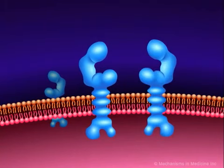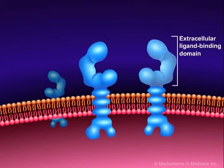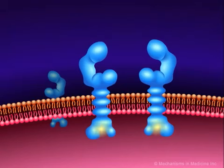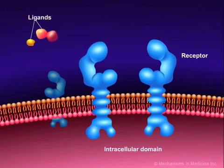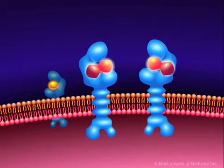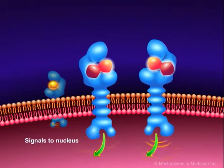Receptors often consist of three domains: an extracellular ligand binding domain, a transmembrane domain, and an intracellular domain. Binding of a ligand to the extracellular domain activates the receptor tyrosine kinase, which activates other proteins by phosphorylation — adding a phosphate to the amino acid tyrosine on a protein inside the cell. When a ligand binds to the receptor, a signal goes to the intracellular domain, activating the associated enzyme and initiating a cascade of signals to the nucleus that tell the cell to grow and divide or to stop growing.